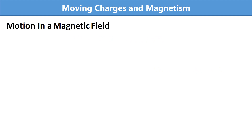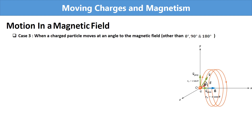The topic for discussion is the motion of a charged particle in a magnetic field. Here we are discussing Case 3: the motion of a charged particle at an angle to the magnetic field. In Case 1, the particle moves parallel or anti-parallel to the field, where θ equals 0 or 180 degrees. In Case 2, the particle moves perpendicular to the field, where θ equals 90 degrees. In Case 3, we consider any general value of θ other than 0, 90, or 180 degrees.